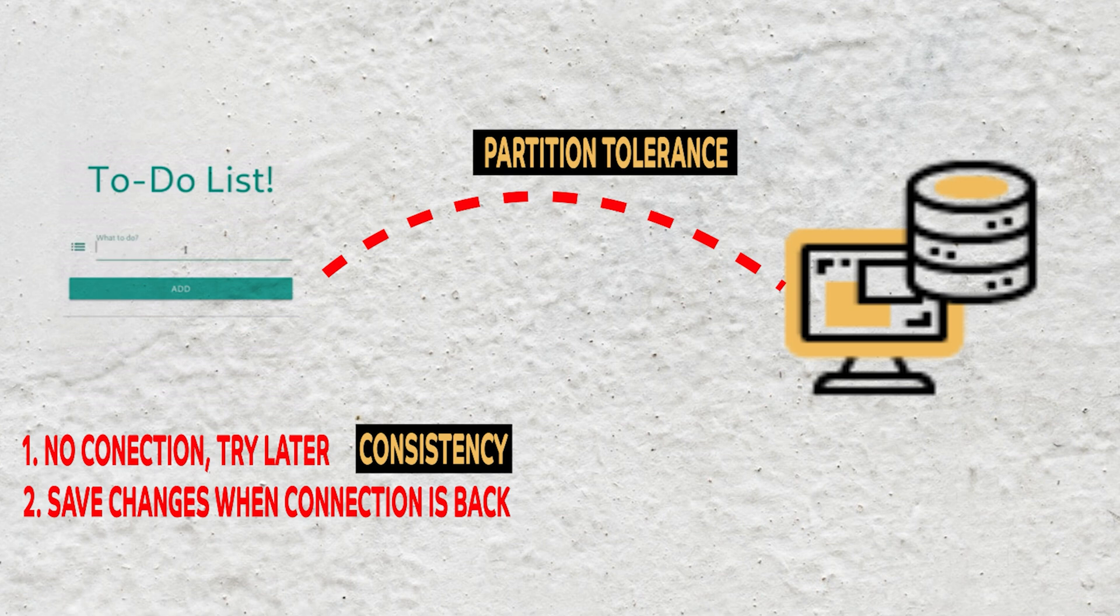You can however choose to keep the UI responsive and let users do what they are doing. Especially in this case when it's a simple to-do list and having an inconsistent data doesn't really harm anyone. You promise them to eventually make it up-to-date once the network is up. And that is availability. Building distributed systems like this provide many advantages but also adds complexity.